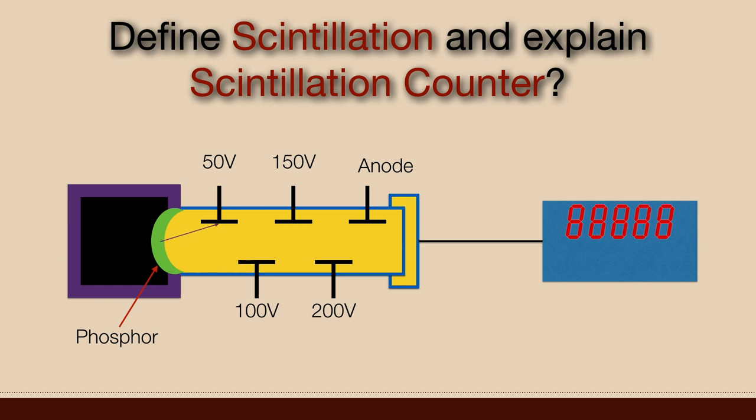When light strikes a dynode, the electrons are ejected out from the surface of the photocathode due to photoelectric effect and gets attracted towards next dynode where they can eject even more electrons.